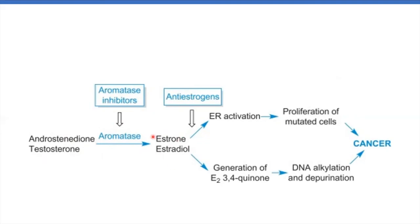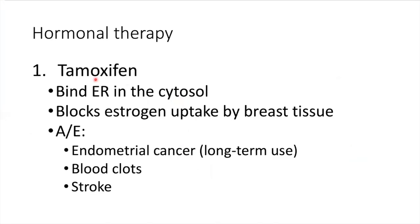Meanwhile, anti-estrogens like tamoxifen would block the effect of estrogen. The estrogen receptor is located in the cytosol, and the function of tamoxifen is to bind to the estrogen receptor. Thereby, it will block estrogen uptake by the breast tissue because the receptor is already occupied, so estrogen will not be able to bind to that specific receptor.